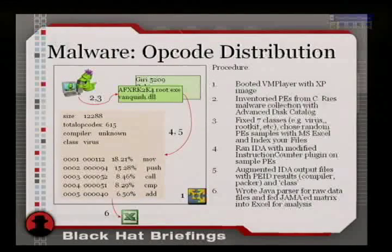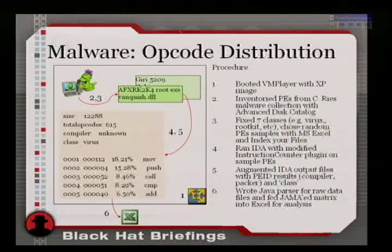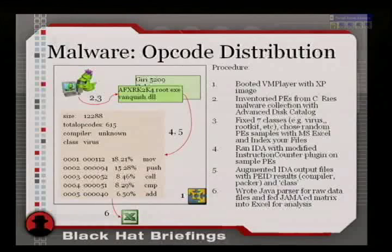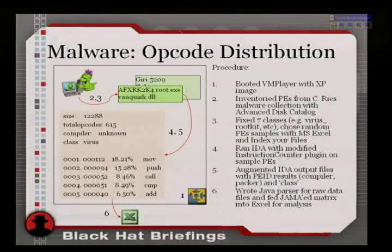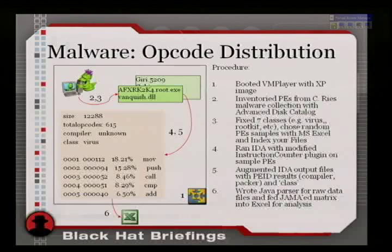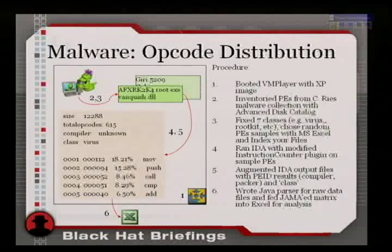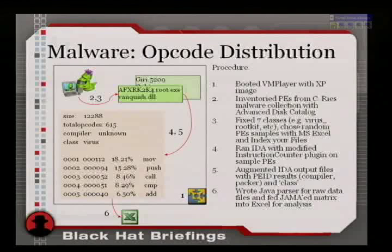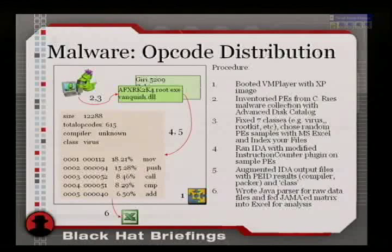For the malware, I took a few more precautions — I listened to Jason Geffner and Scott Lambert, who told me to always do this in a virtualization environment, so I did it in VM Player. The difference from the goodware procedure was that I fixed seven classes: rootkits, Trojans, backdoors, tools, bots, and others. I assigned the malware to these seven classes.